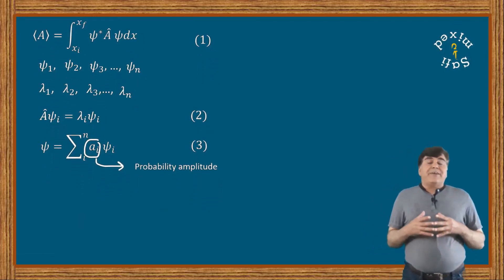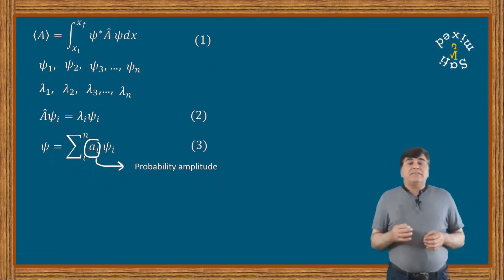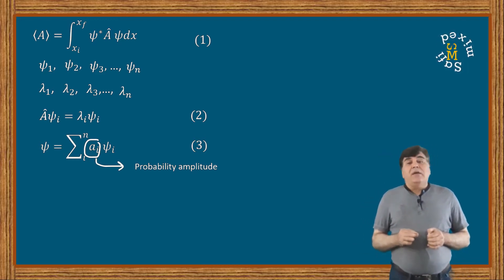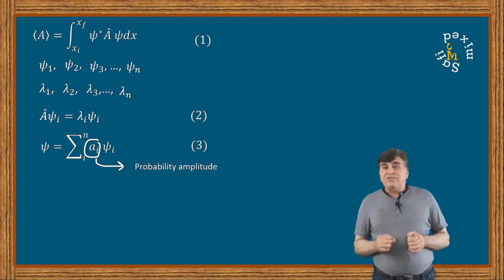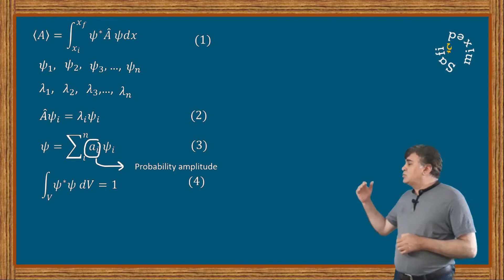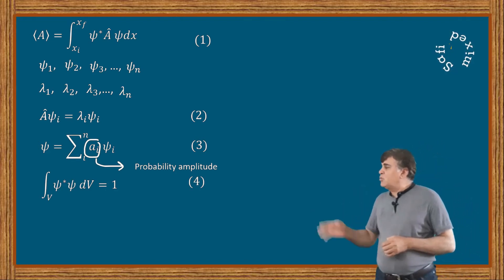To observe their characteristics, let us first apply the normalization condition on the wave function ψ. According to the normalization condition, we can write ψ* ψ integrated over the whole volume dV equals 1.